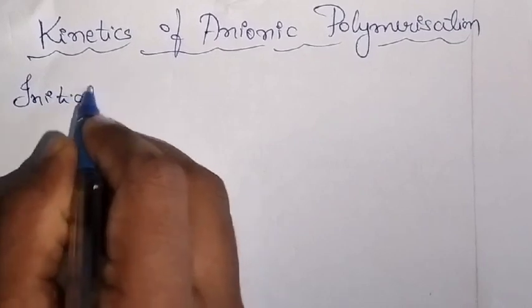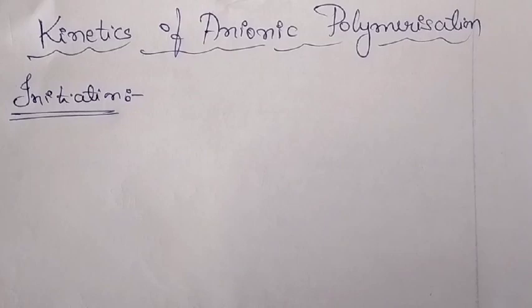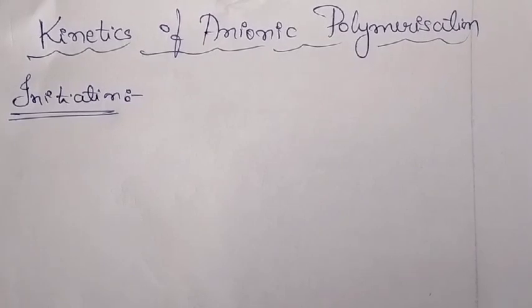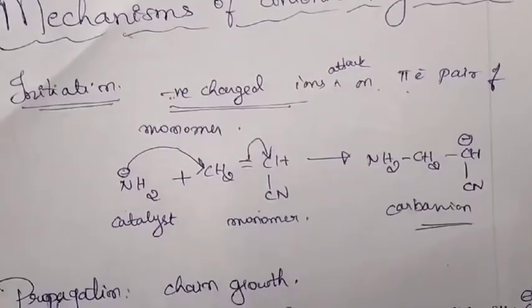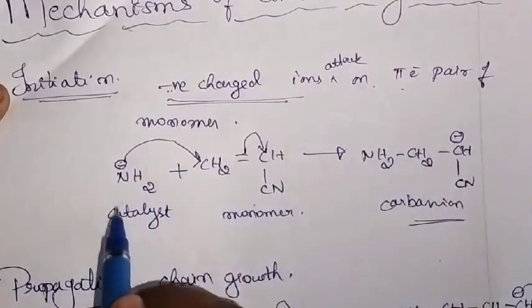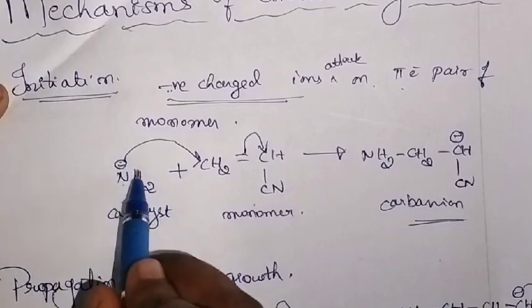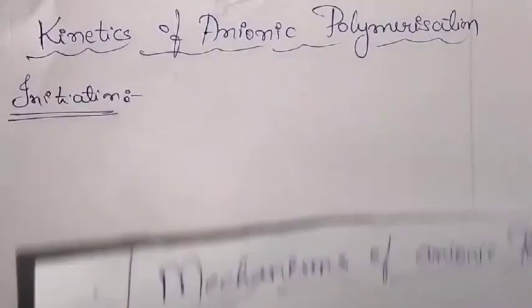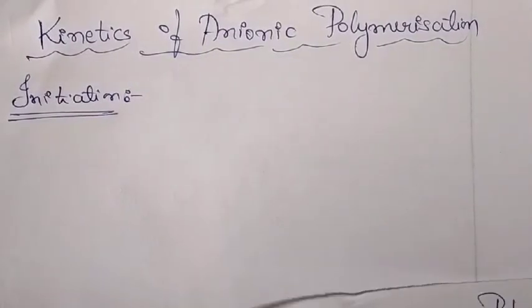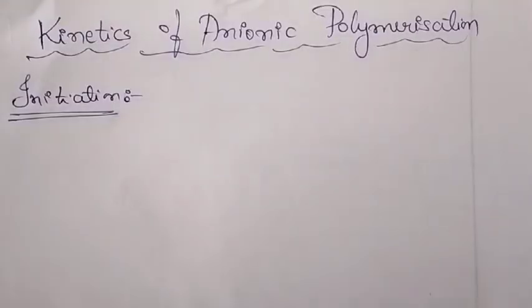Initiation. In the mechanism, what did we see? I have a mechanism here — this is the mechanism part that we have already studied. You needed a catalyst. In the kinetics part, we are not writing the NH₂ or the monomer explicitly. Instead, we will represent those by some letters.